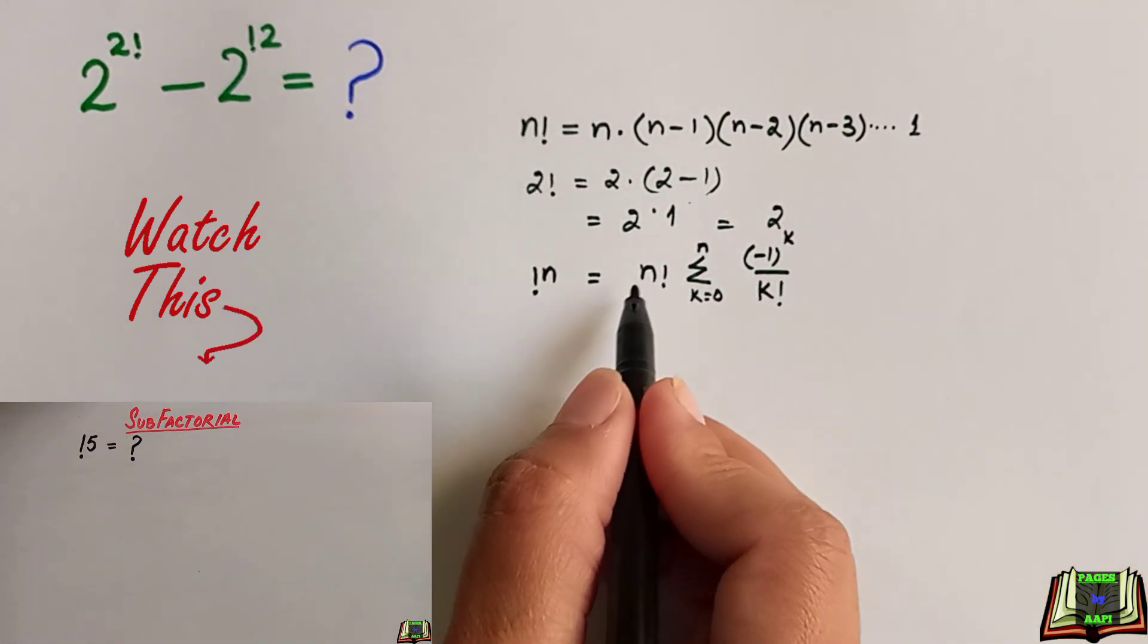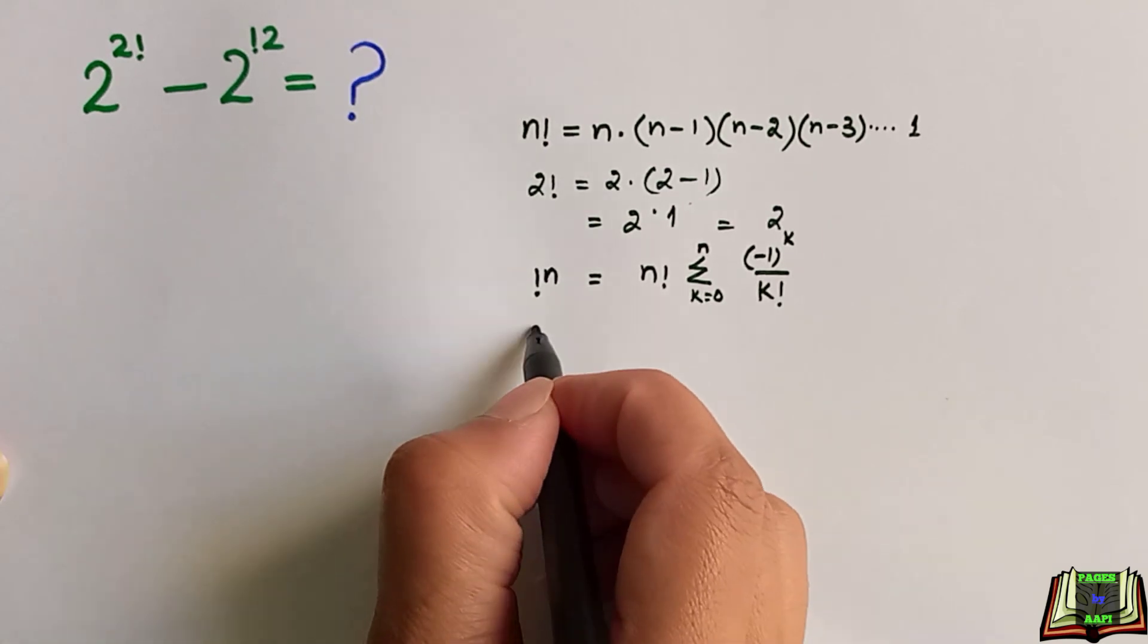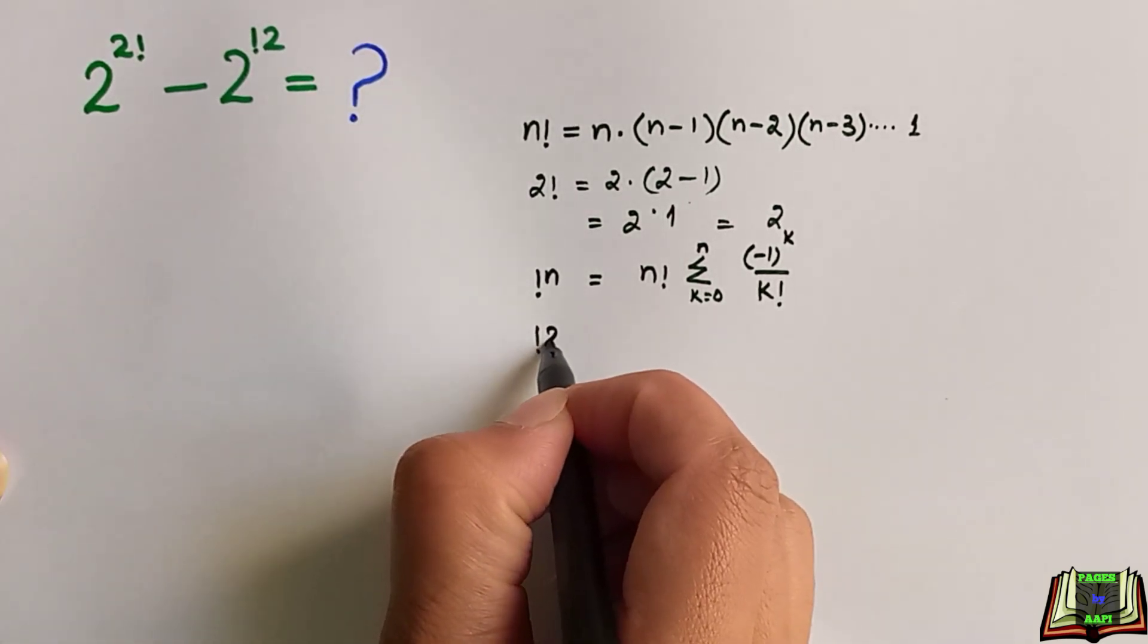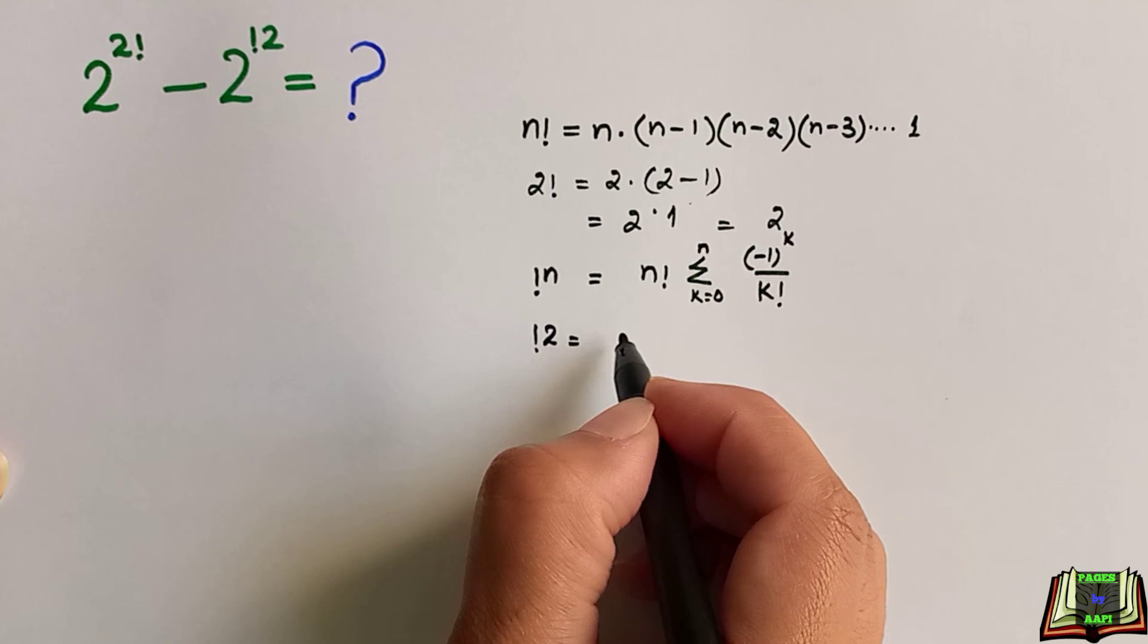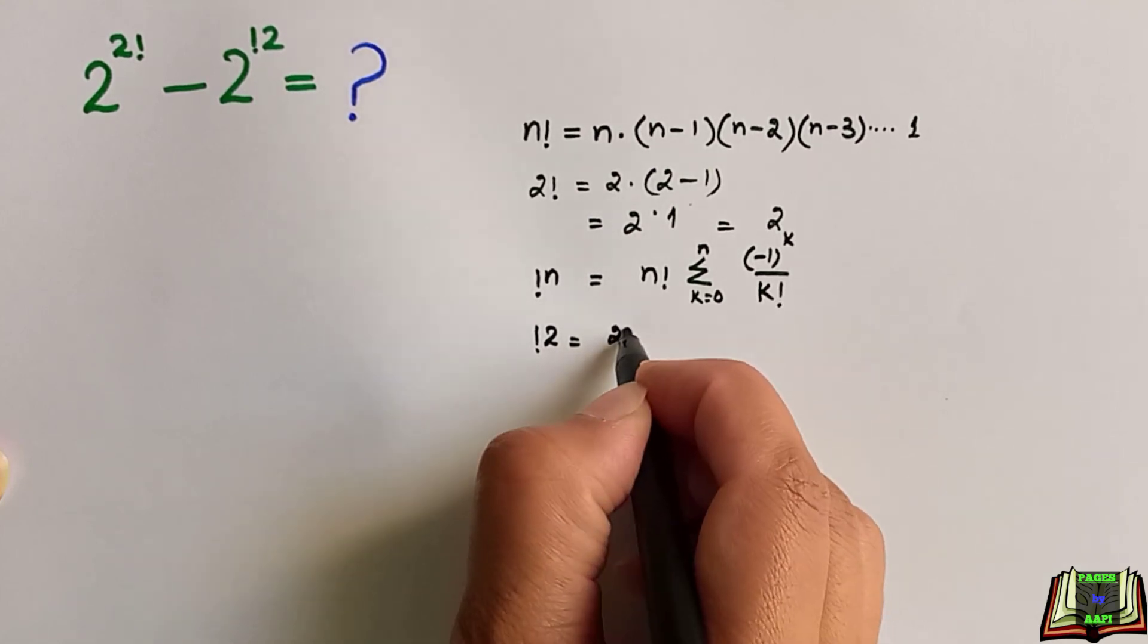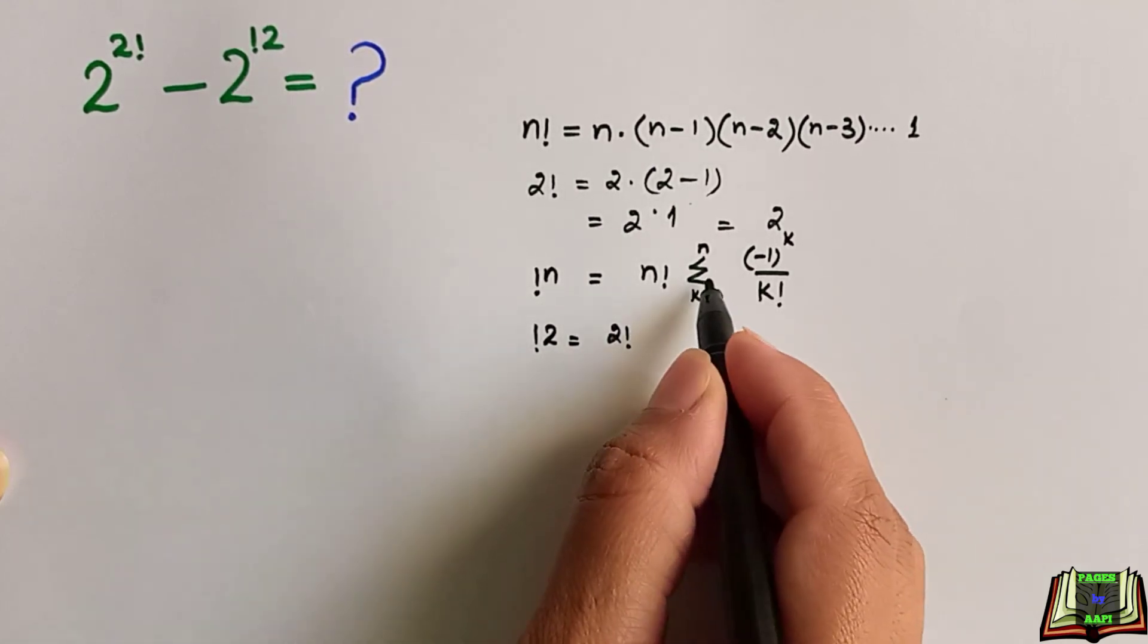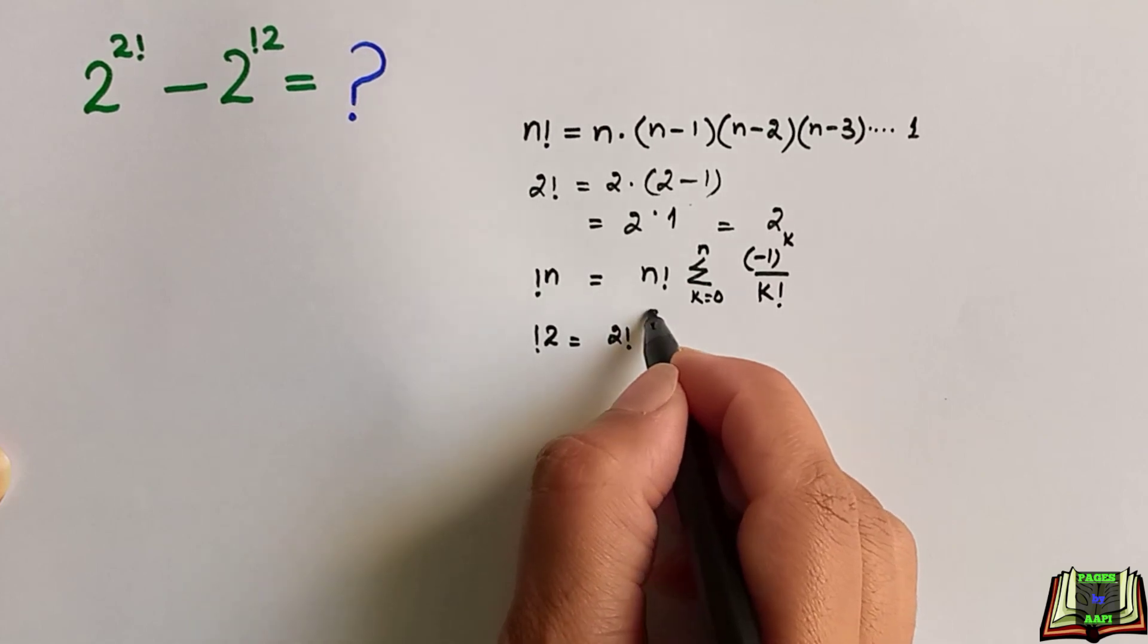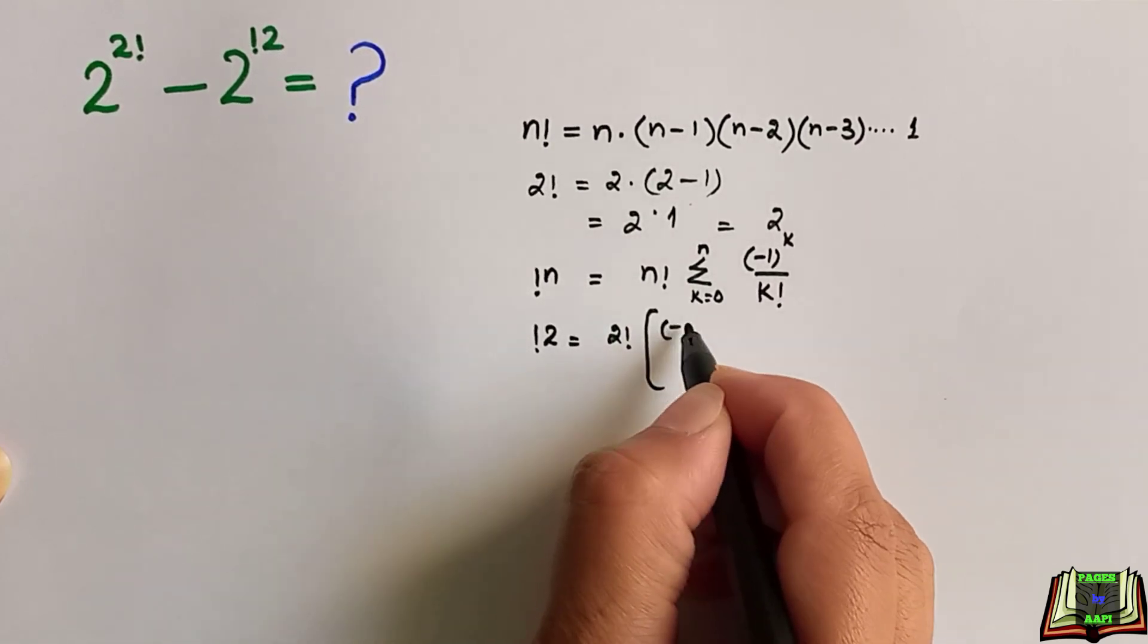Now let's put the value of n, which is 2. Subfactorial of 2 equals 2 factorial times the sum where k goes from 0 to 2, that is 0, 1, and 2.